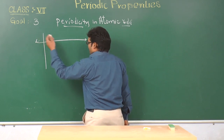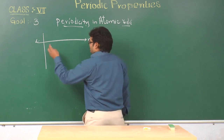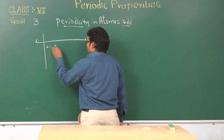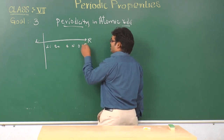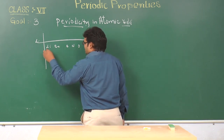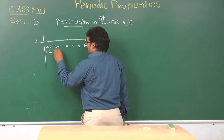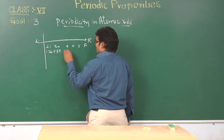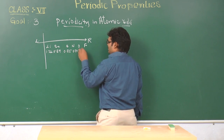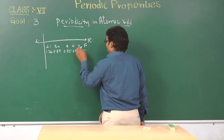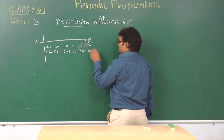If we take the example of the second period elements — lithium, beryllium, boron, nitrogen, oxygen, fluorine — the values are 1.32, then 0.89, 0.85, 0.77, 0.75, and then 0.72.